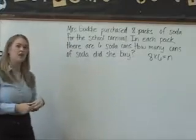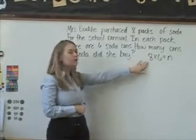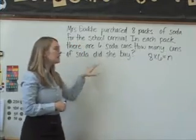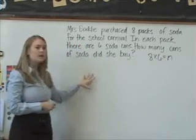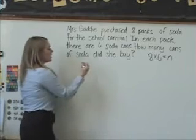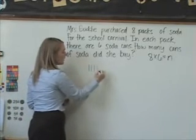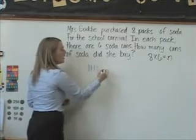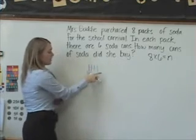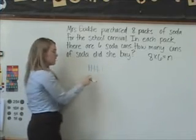With the tally marks strategy, after the students can recognize that this problem represents eight groups of six, they can begin representing the cans of soda using tally marks. They would bundle these tally marks in groups of five, representing eight groups of six. We'll make eight different groups of six tally marks.